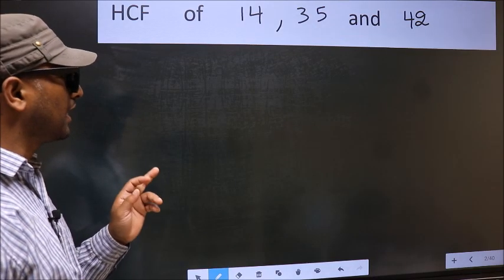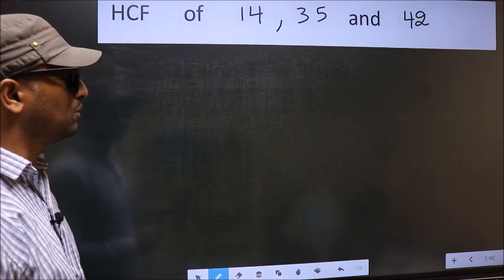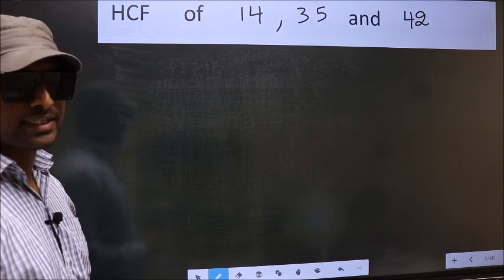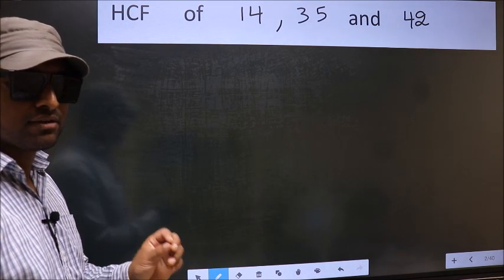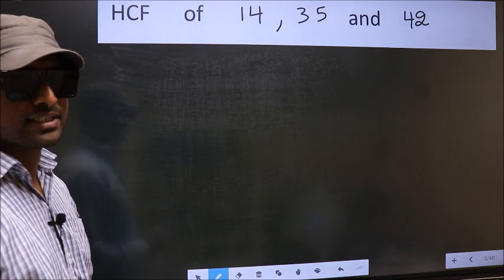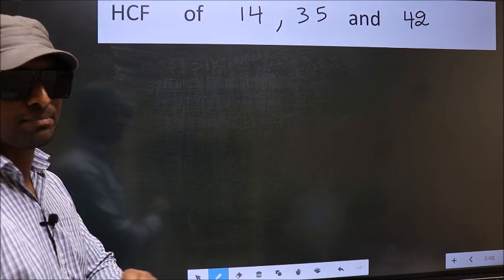HCF of 14, 35 and 42. To find the HCF, we should do the prime factorization of each number separately.